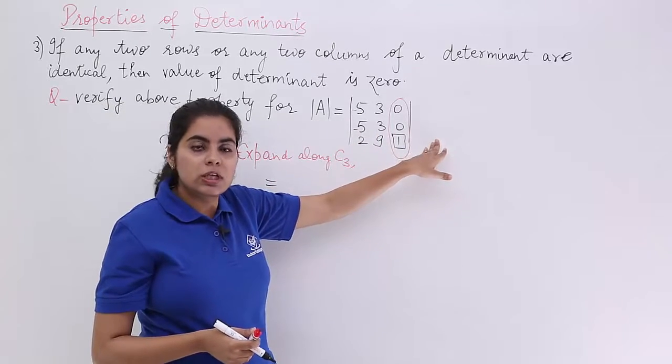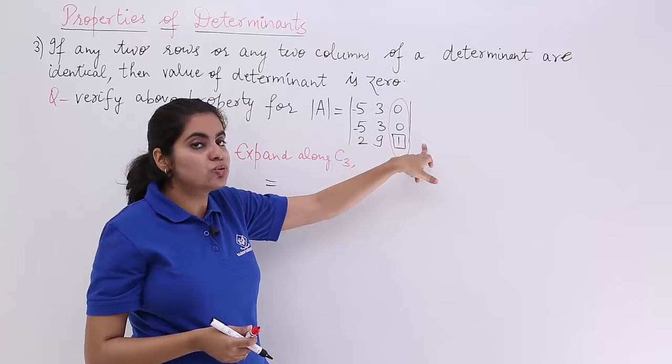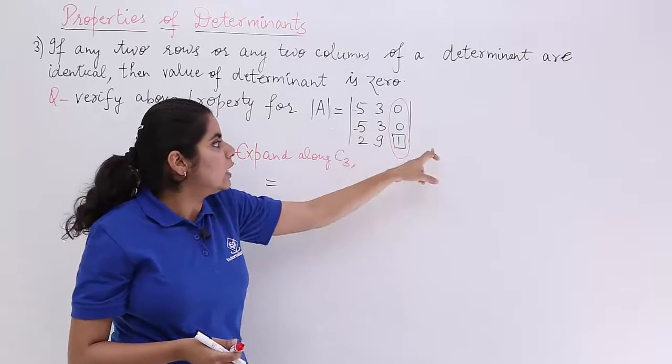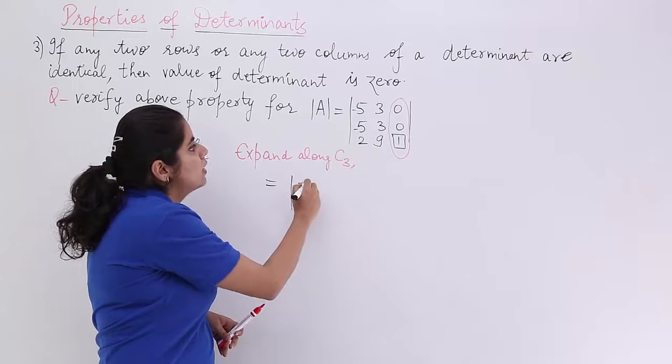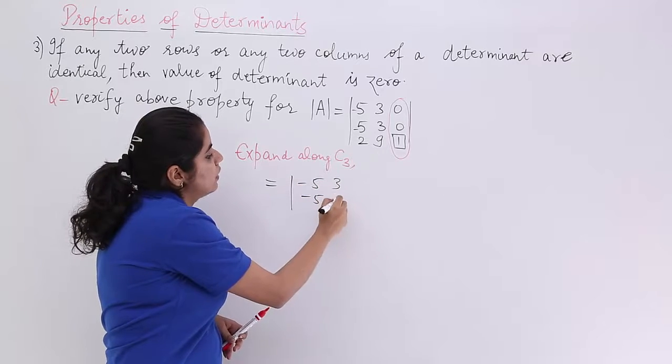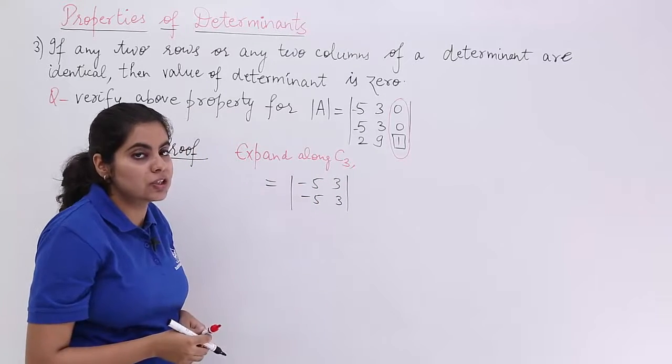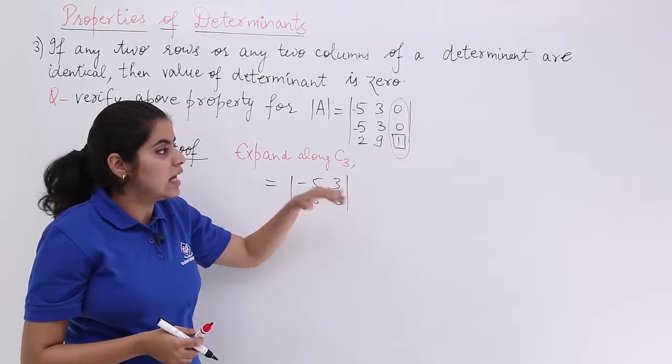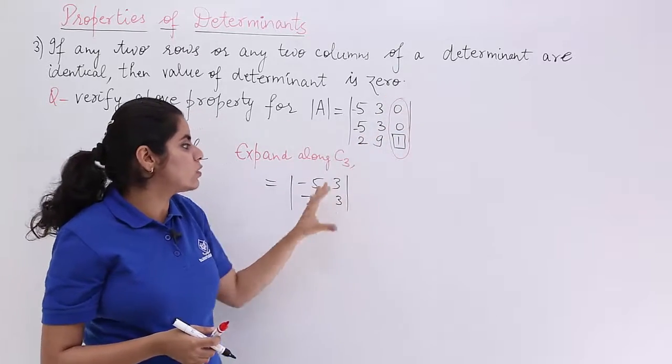3rd row does not make any difference to us because we have to ignore it. Ignore 3rd row, ignore 3rd column. The value is what? -5, 3, -5, 3. That we have to take into consideration. Again I am speaking. 1 is there. Ignore this row, ignore this column. This is there.